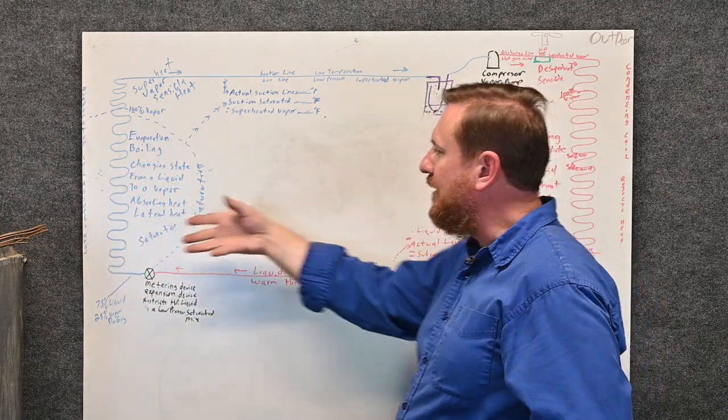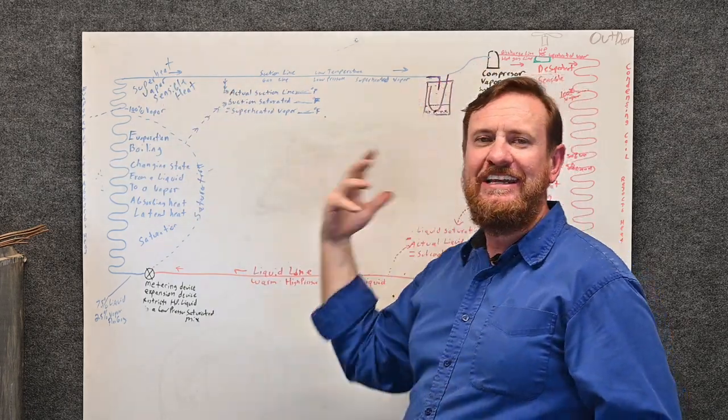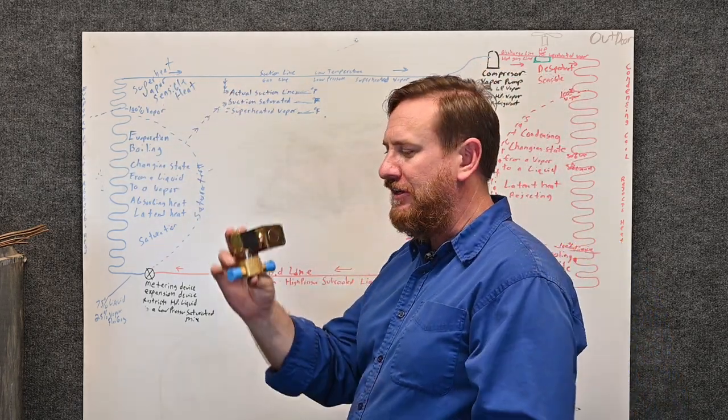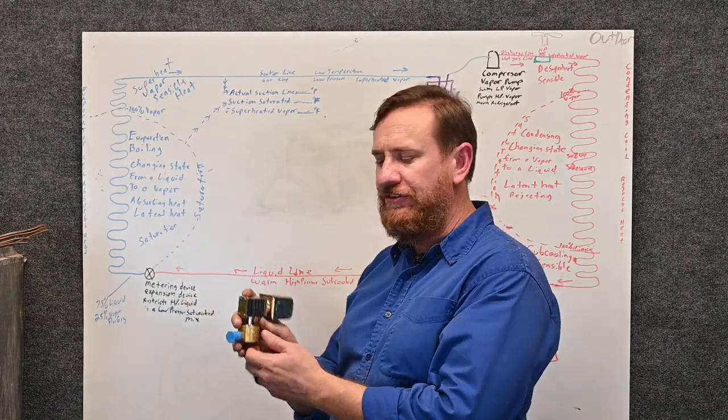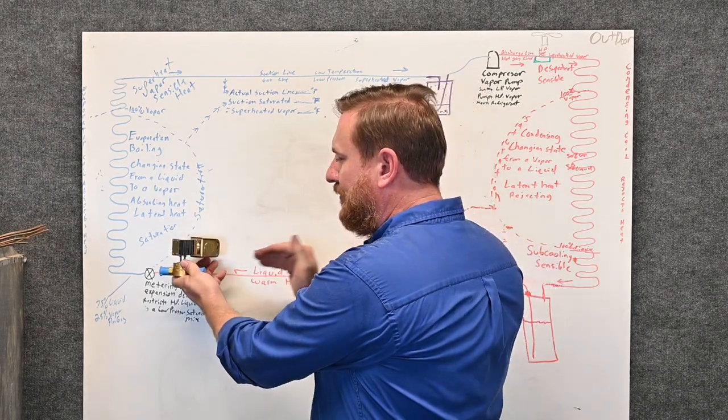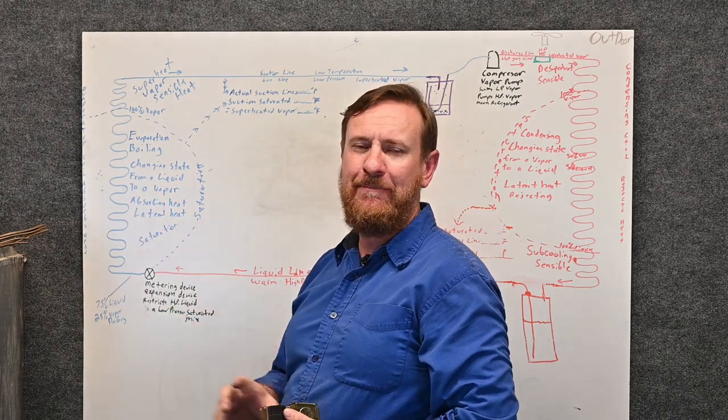Then the compressor starts up and it pulls all this liquid refrigerant straight into the suction side and it can kill or damage the compressor. So what we can do is use this liquid line solenoid valve here and this closes. When this closes, it stops the flow of refrigerant. So that way it prevents refrigerant from migrating to the evaporator coil.